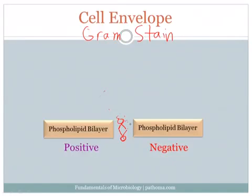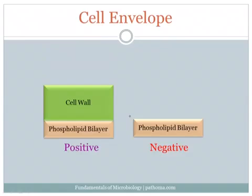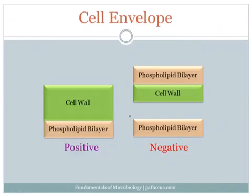Each gram-positive and gram-negative bacteria also has a cell wall that comes next. In gram-positive bacteria, the cell wall is much thicker. This is made up of peptidoglycans, which we'll talk about in a little bit. Gram-negatives have a third layer, which is another phospholipid bilayer on the outside. So how is this Gram stain performed?